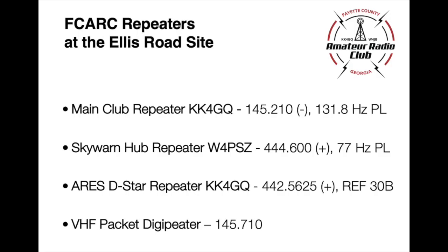Hi, I'm Joe Domileski, KI4ASK with the Fayette County Amateur Radio Club. There are currently four repeaters located at the Ellis Road site: our VHF Main Club repeater, the Skywarn Hub repeater, an ARES D-Star repeater on Reflector 30 Bravo, and a VHF Packet DigiPeter.